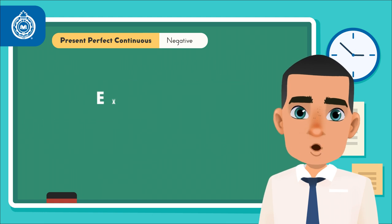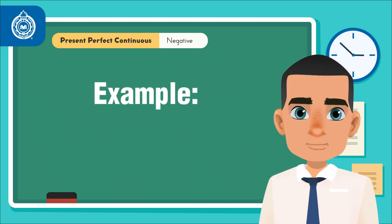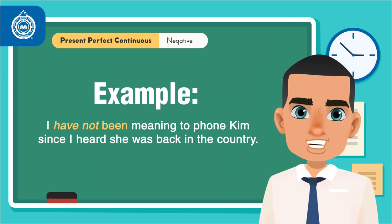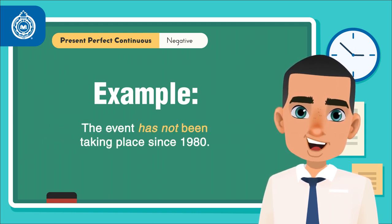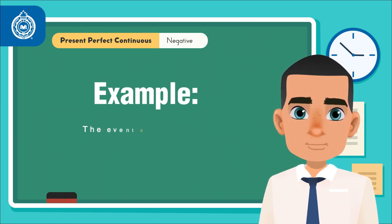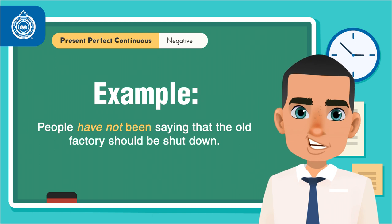Here are some examples. I have not been meaning to phone Kim since I heard she was back in the country. The event has not been taking place since 1980. People have not been saying that the old factory should be shut down.